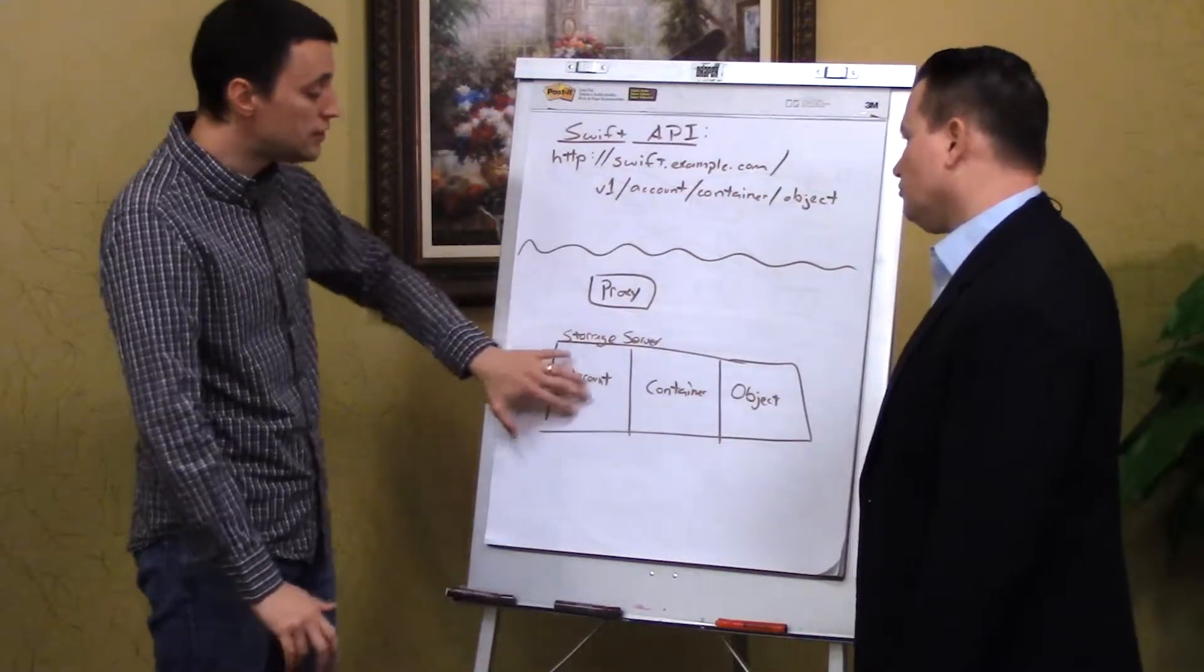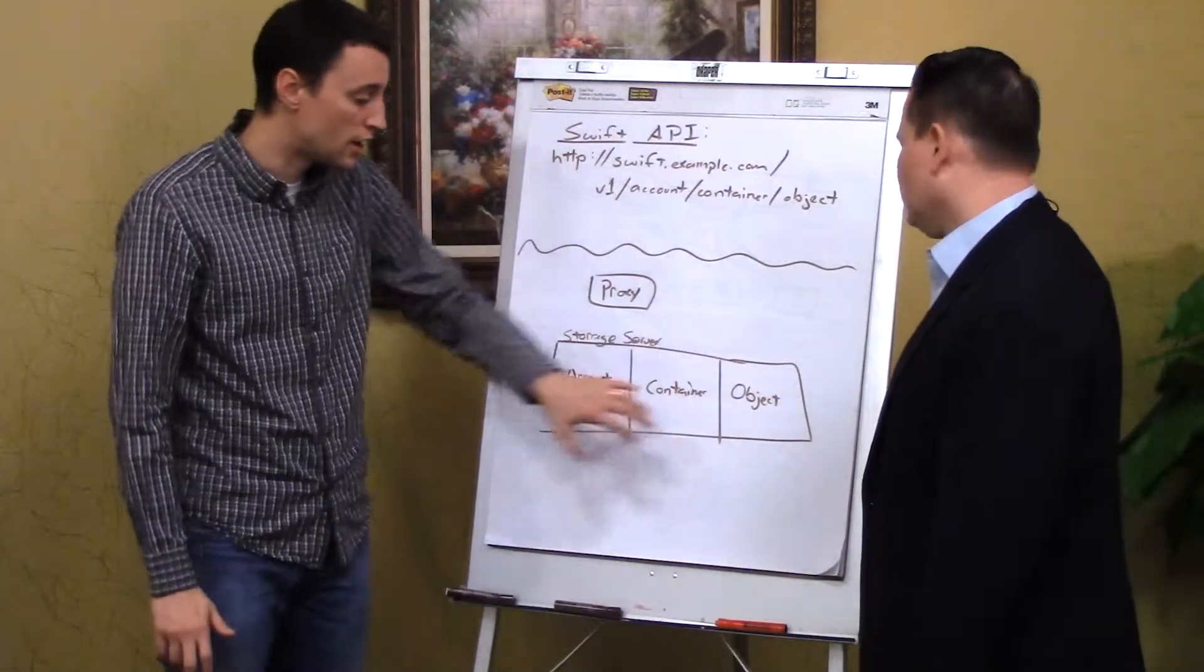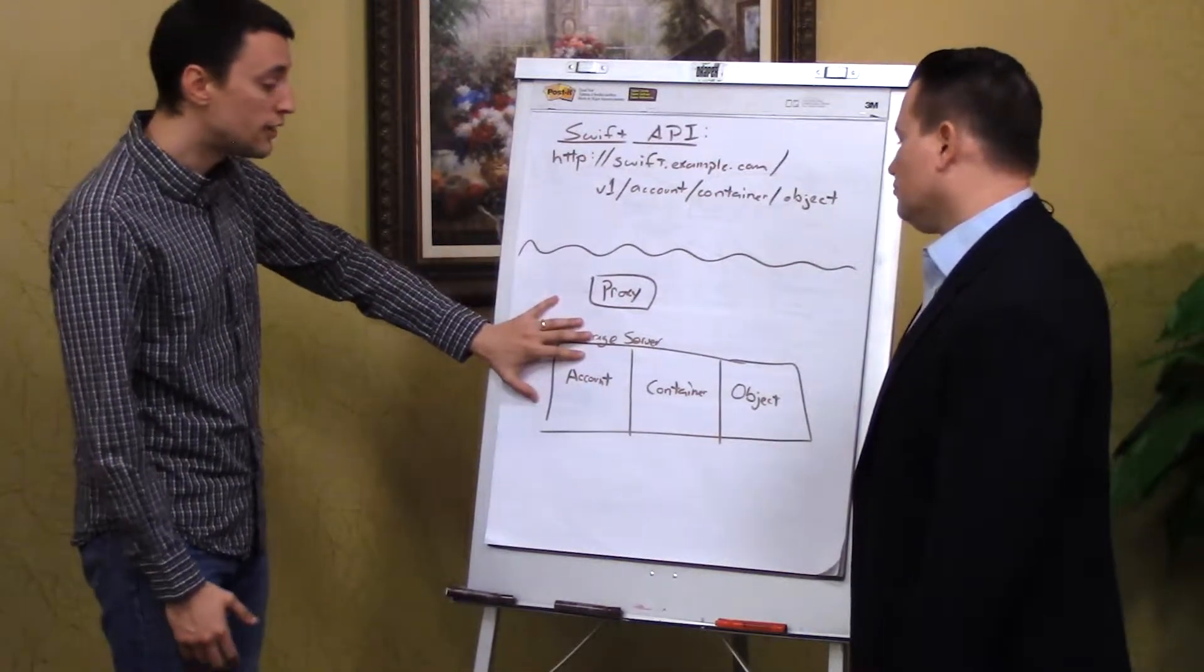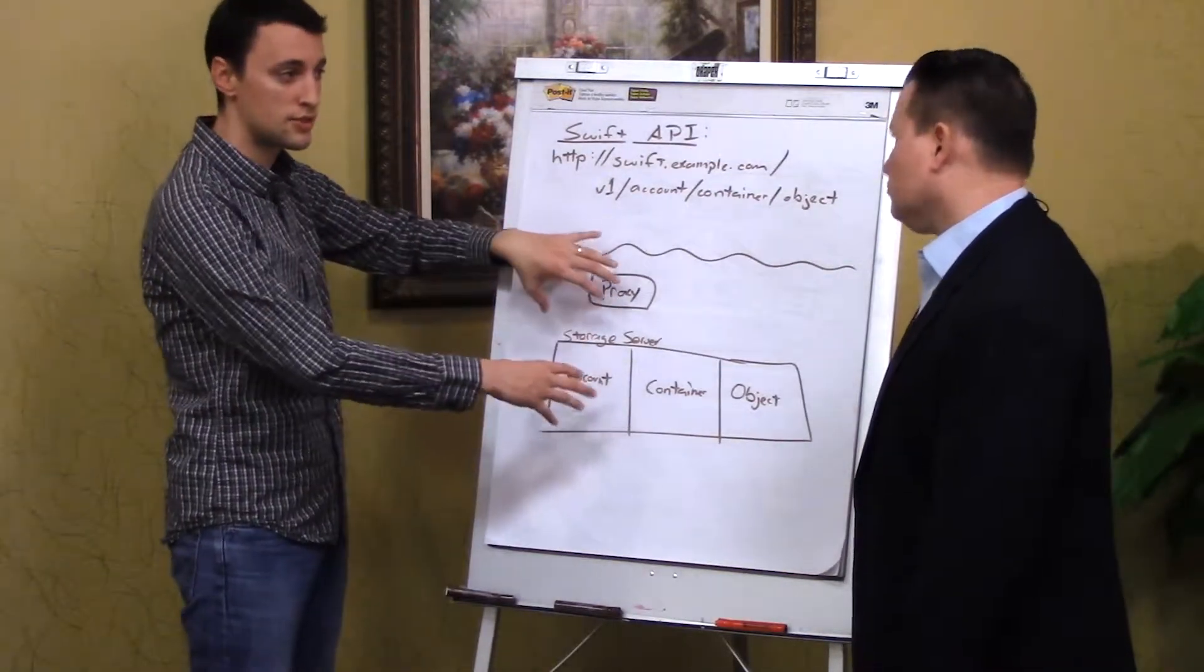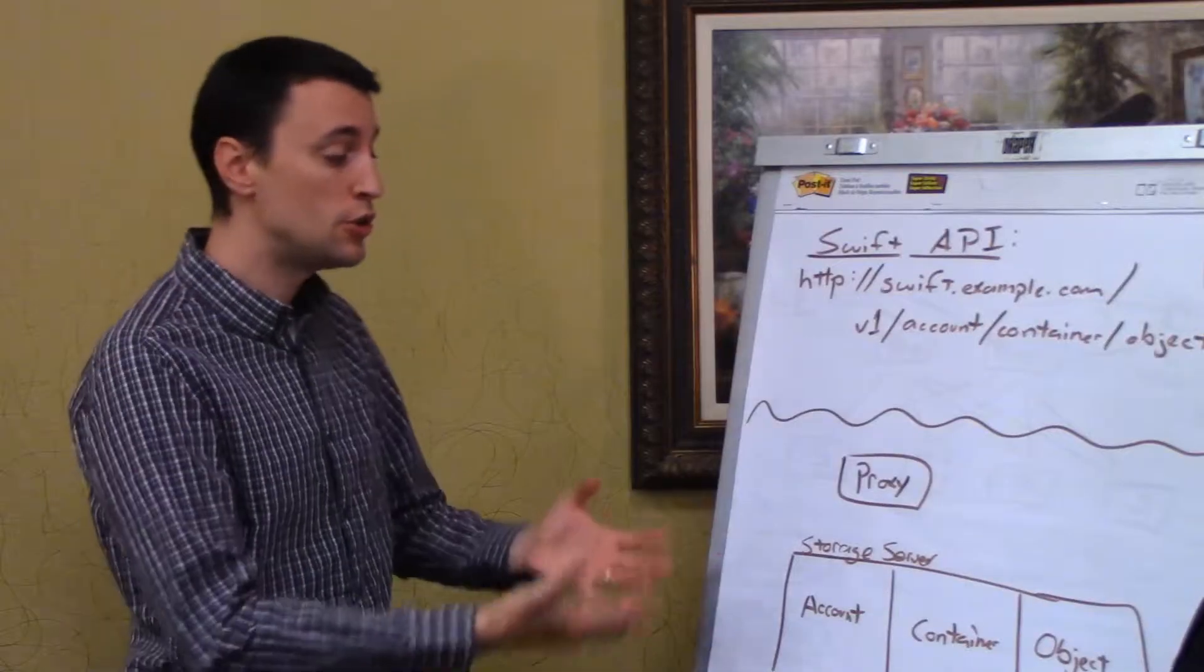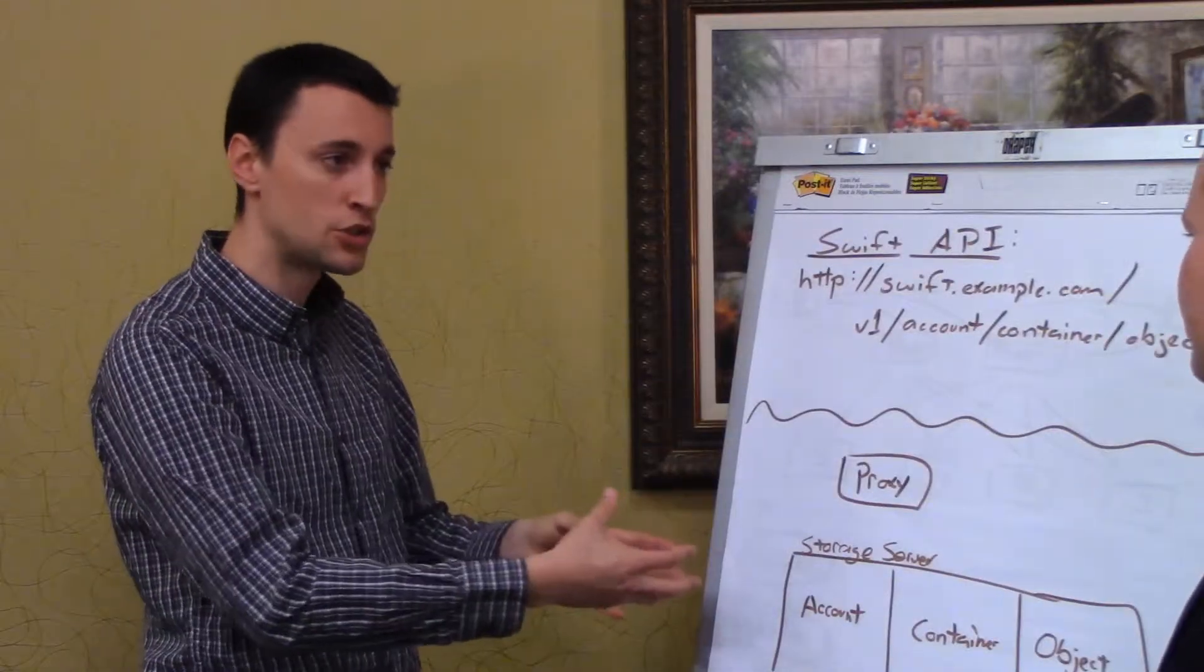With the storage servers, there's three kinds. The account, container, and the object. So maps to the account, the container, and the object storage nodes. And so these each are responsible for their respective entity within Swift. Now the really great thing about this design is that these are just the logical processes that are running, and if you need more, you can add more. So you can scale out.